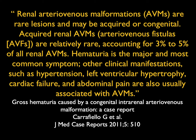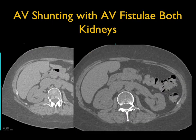This patient had ureteroscopy because of hematuria with no identified cause. They biopsied a few times, then gave contrast and found the vascular malformation. Renal AVMs are rare lesions and may be acquired or congenital. Acquired are rare. Hematuria is the major and most common symptom. Other manifestations — hypertension, LVH, cardiac failure, and abdominal pain — are usually associated with these AVMs.